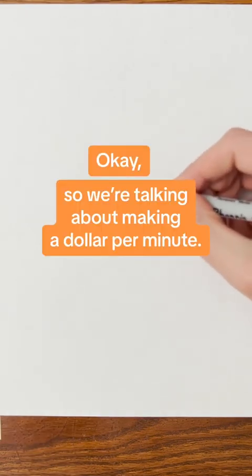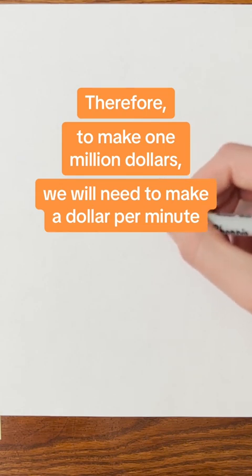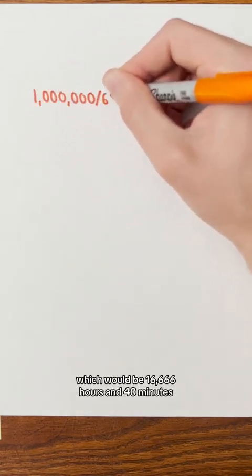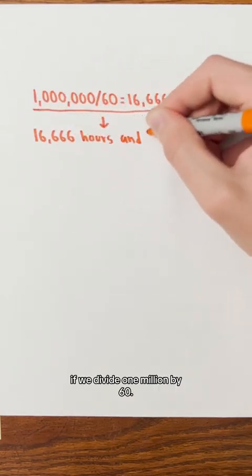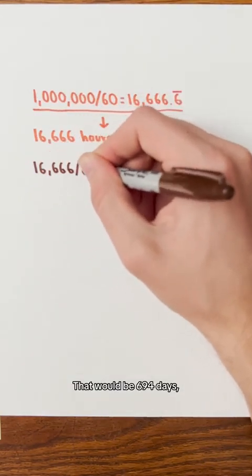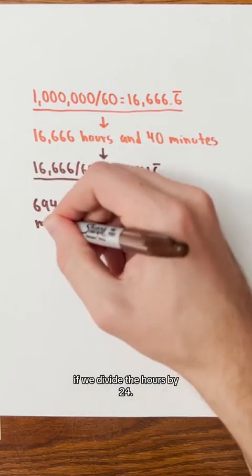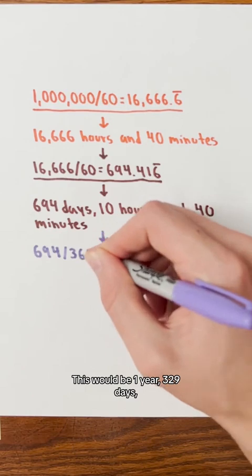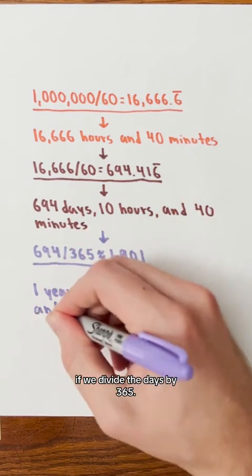Okay, so we're talking about making a dollar per minute. Therefore, to make 1 million dollars, we would need to make a dollar per minute for 1 million minutes. Which would be 16,666 hours and 40 minutes if we divide 1 million by 60. That would be 694 days, 10 hours, and 40 minutes if we divide the hours by 24. This would be 1 year, 329 days, 10 hours, and 40 minutes if we divide the days by 365.